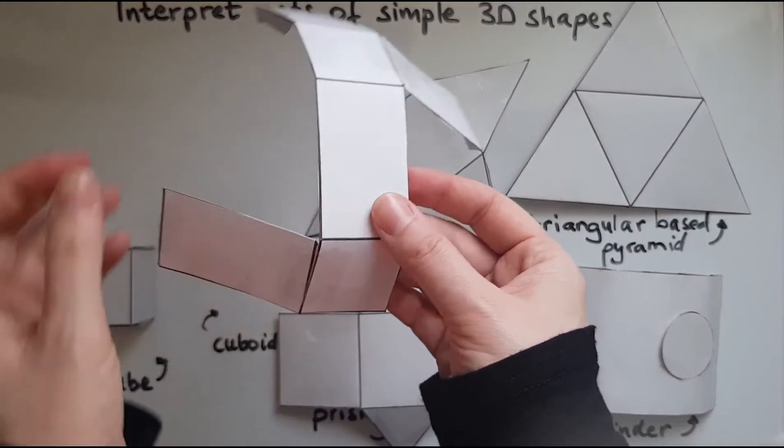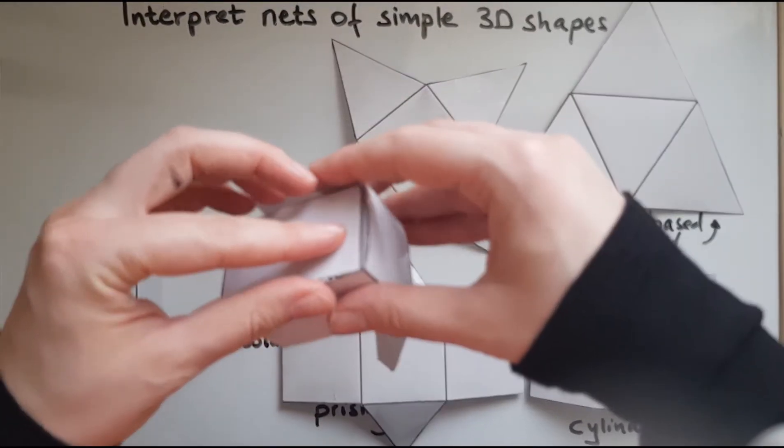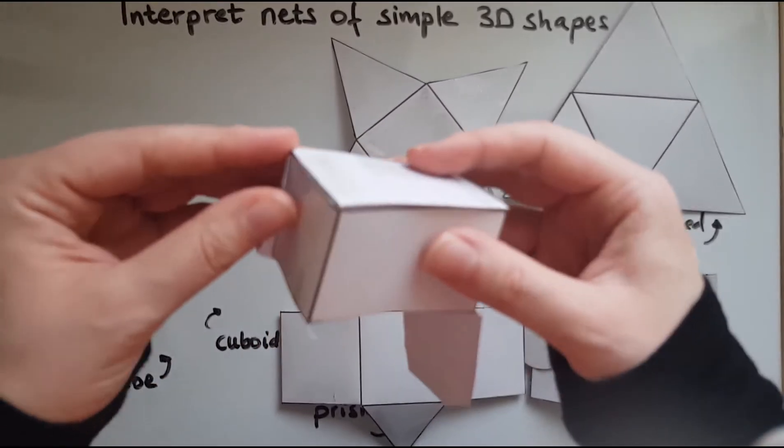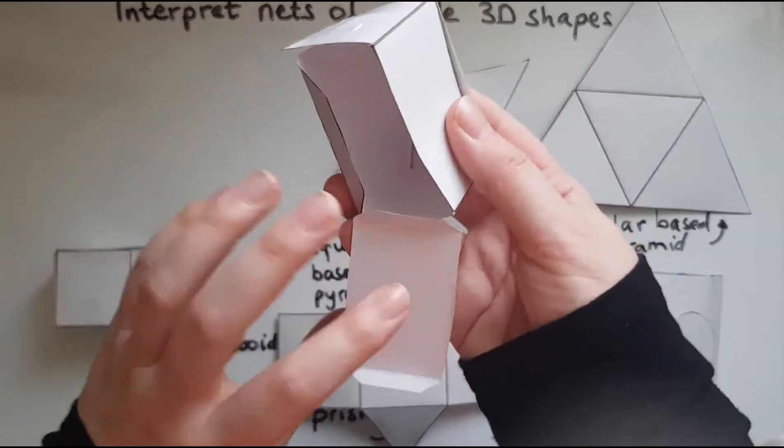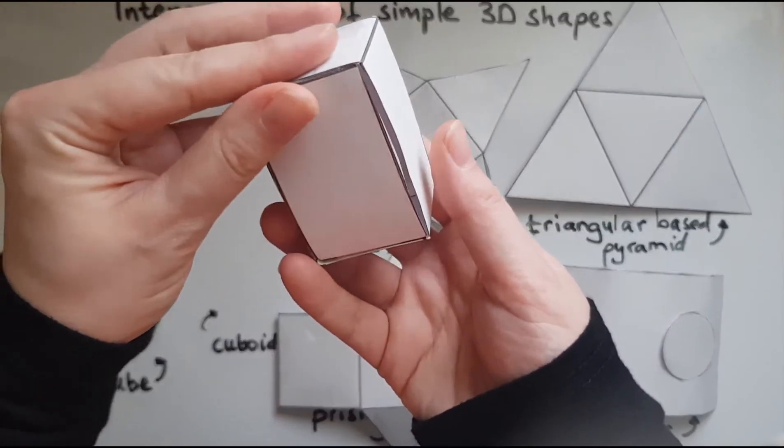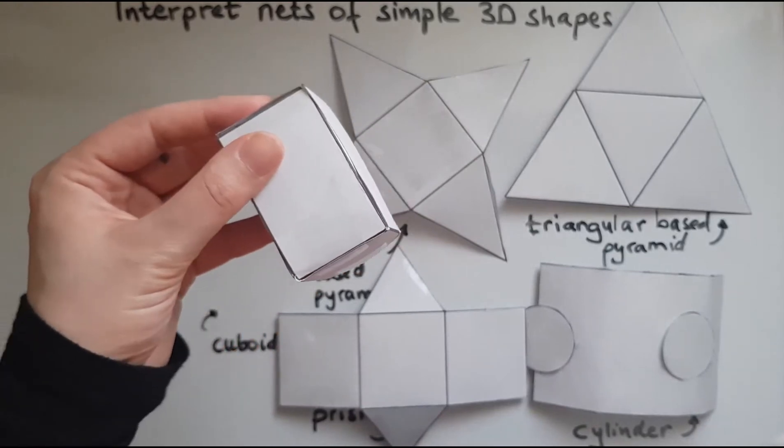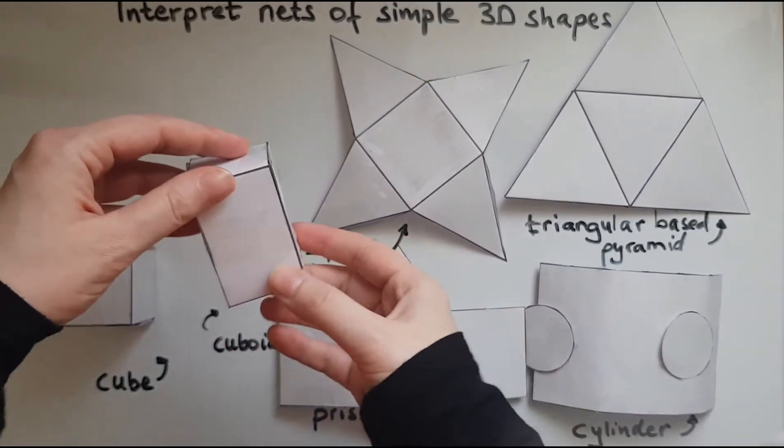Let's see. Can we still make a cuboid? Yes, we can. There is our cuboid. So we'll place it next to the cube.